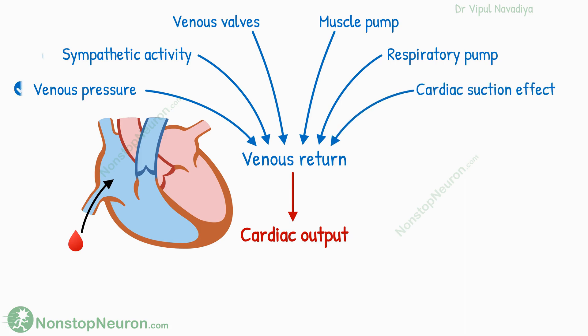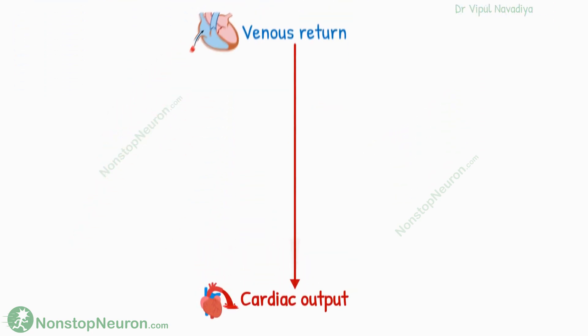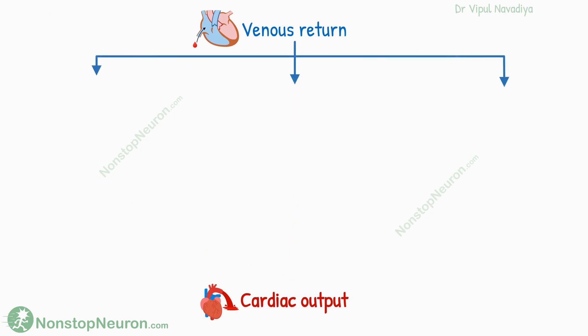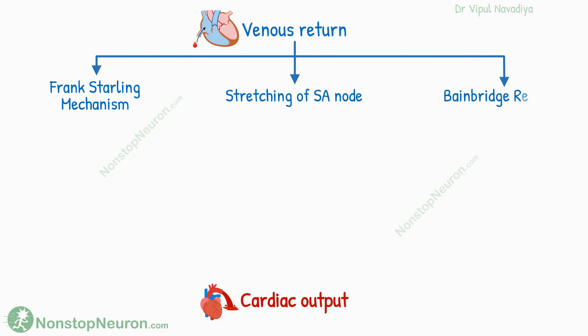We have already studied these factors in detail in a video on venous return, so we won't repeat that detail here. Here, we will focus on how venous return affects cardiac output. There are three mechanisms behind this: Frank-Starling mechanism, direct stretching of the SA node, and Bain-Bridge reflex.